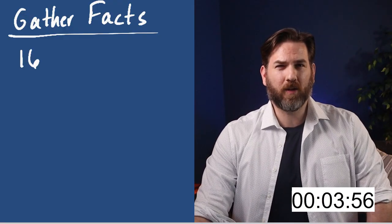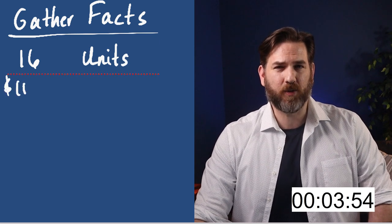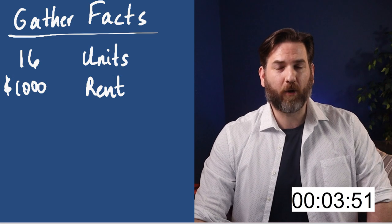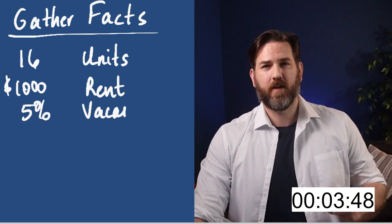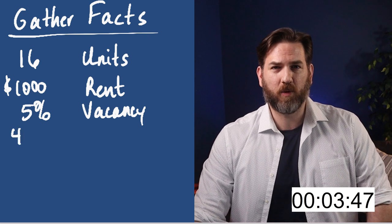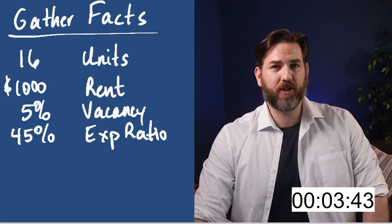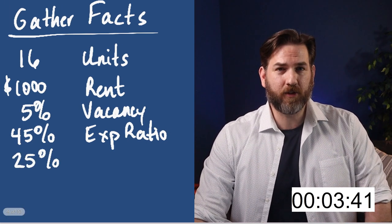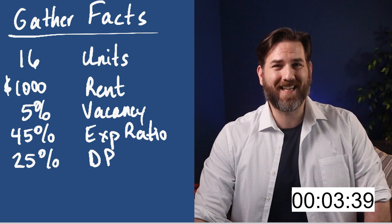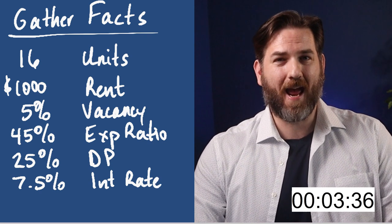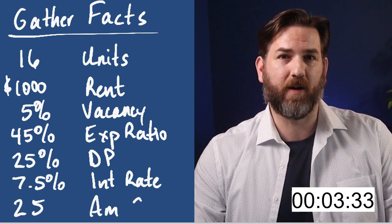Let's get into some real numbers on a deal I'm evaluating right now that's listed for $1 million. We're going to look at a real live deal: an apartment complex that is 16 units, each a one-bedroom apartment. The going market rent is $1,000 a month, and we use a 5% vacancy rate for our calculations. We'll use the industry standard 45% expense ratio since we don't have data from the seller. The lender is offering a 25% down payment loan at a 7.5% interest rate with a 25-year amortization schedule.